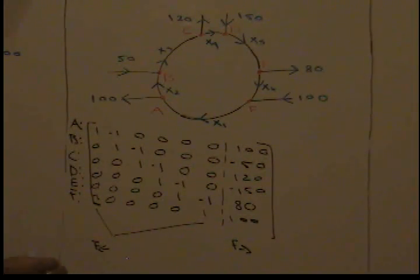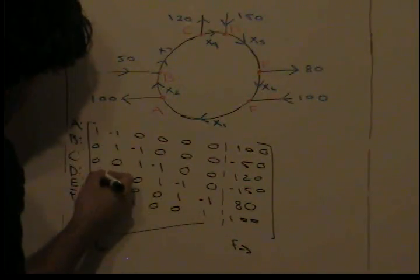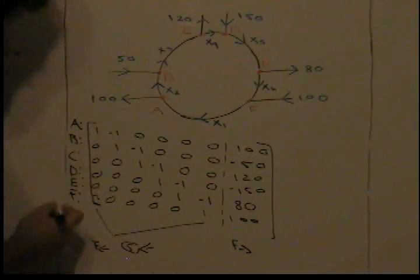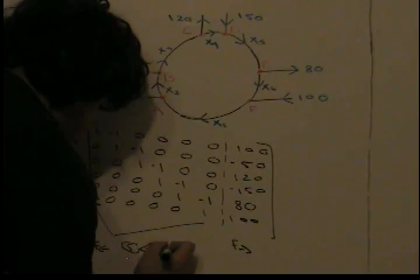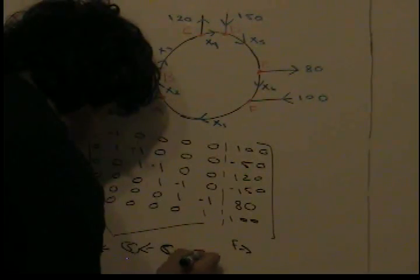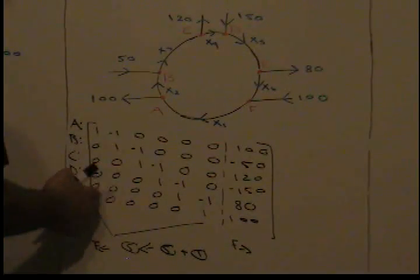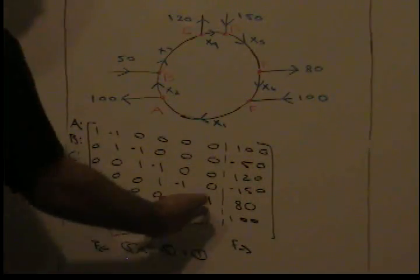All we have to do to row reduce it is get rid of this negative one. In order to do that, we subtract—into row five we're gonna put row five plus row one. That way we get rid of this negative one under the pivot column of A.